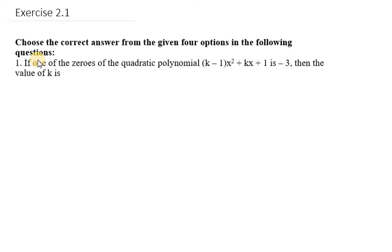Question number 1 says: if one of the zeros of the quadratic polynomial (k-1)x² + kx + 1 is -3, then the value of k is.